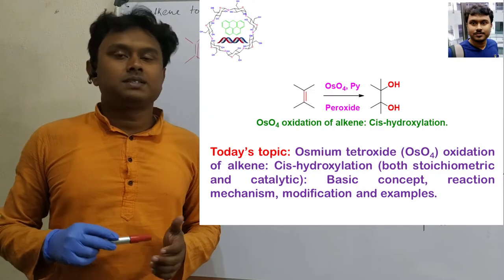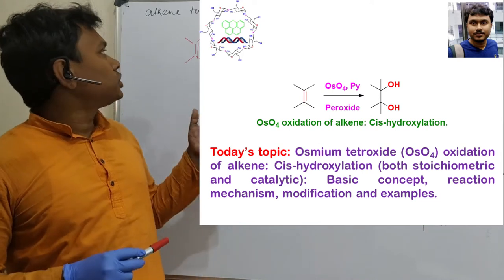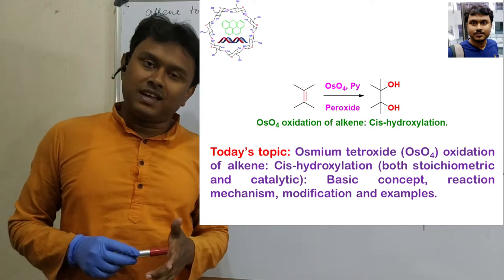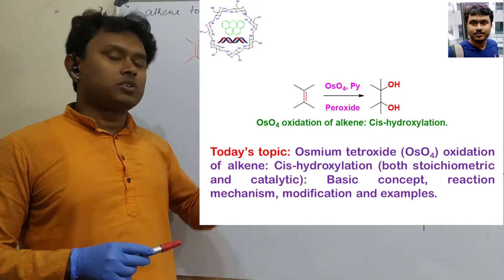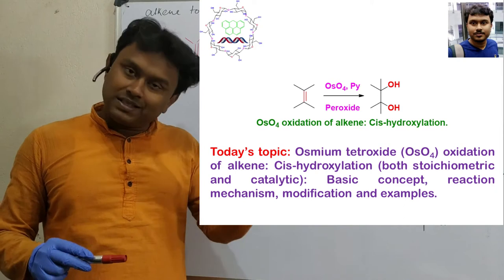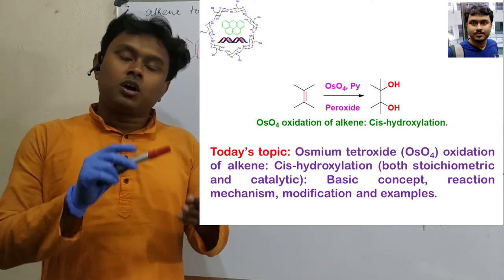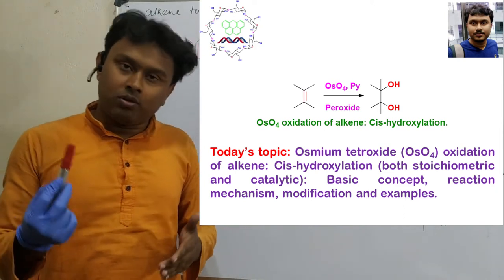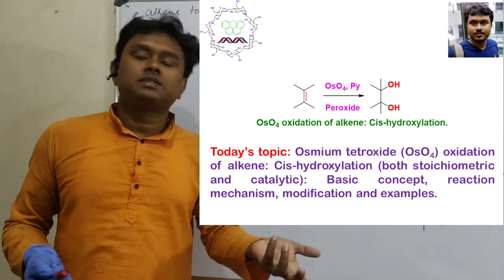Today we will discuss a topic that is the conversion of alkene into cis-diol using osmium tetroxide. There are many methods. I will explain everything step by step in individual videos conversion of alkene into diols. Some is cis, some is trans.